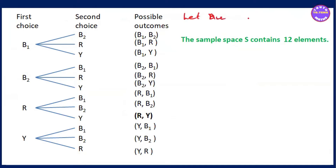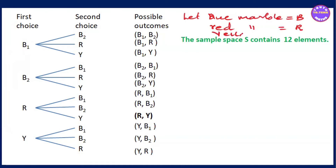The marbles are: Blue marble, Blue marble, Red marble, Yellow marble. We label them B1, B2, R, Y. So the first draw gives us B1, B2, R, or Y.